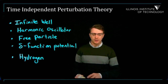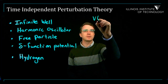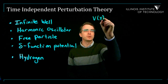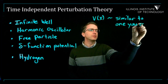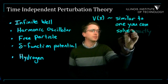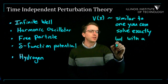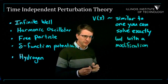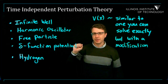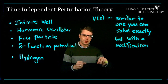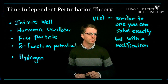The idea is that suppose you encounter a potential v of x which is kind of similar to one you can solve exactly, but with a modification or a slight difference. Call it a perturbation. So you think about something that you know how to do exactly, but you add a little perturbation, something different about it.